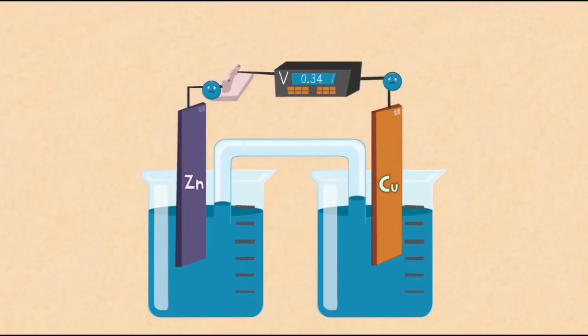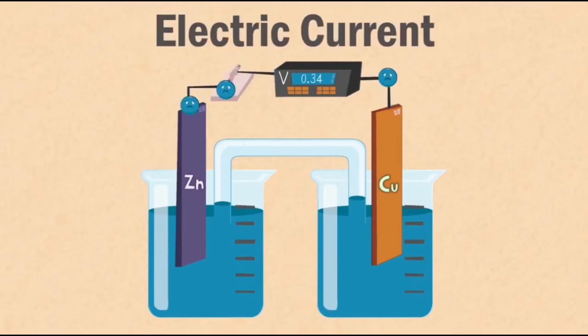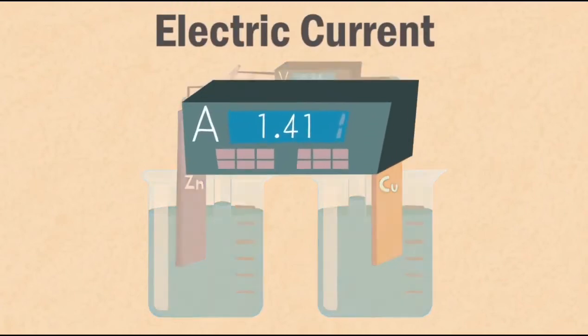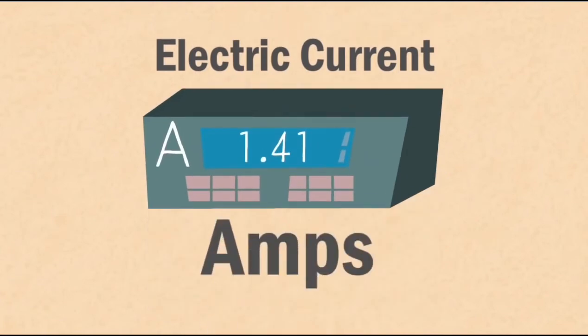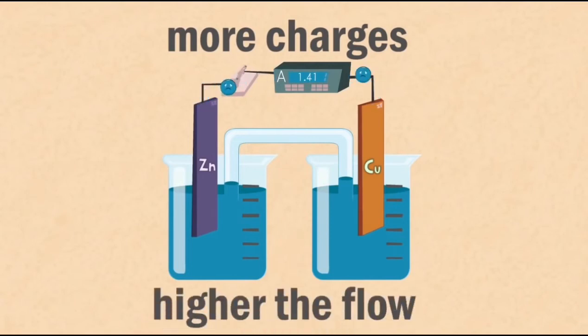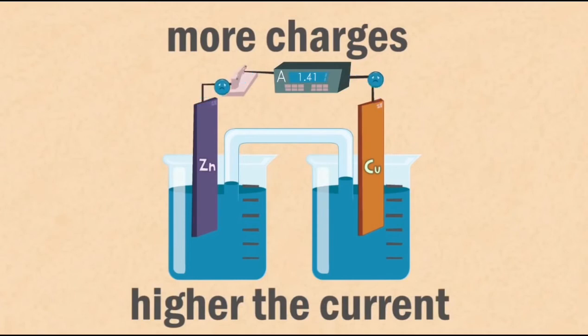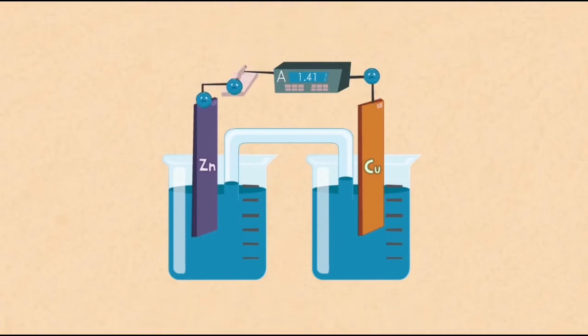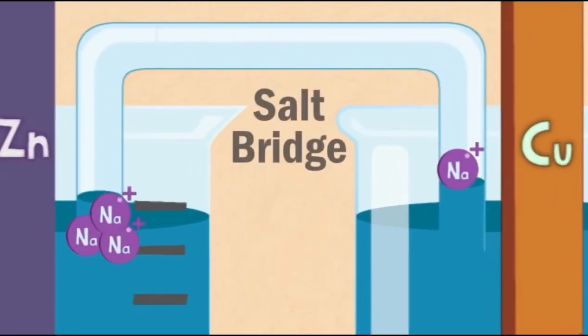The flow of electrons is the electric current and is measured using an ammeter. Current is measured in amps. The more charges that pass a point in the wire at any given second, the higher the flow, therefore the higher the current. It is important that you remember that the electrons do not flow through the solution, only the wire. It is charged ions that move across the salt bridge.